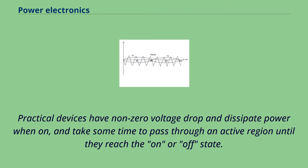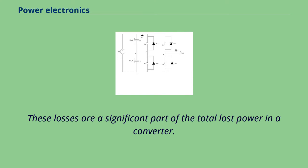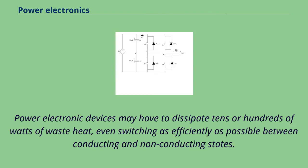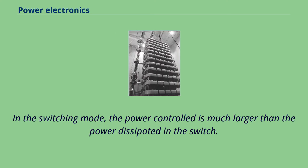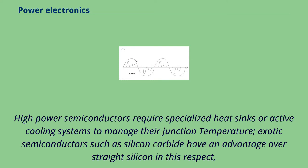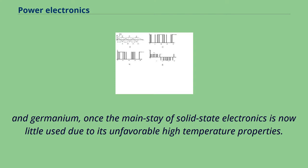Practical devices have non-zero voltage drop and dissipate power when on, and take some time to pass through an active region until they reach the on or off state. These losses are a significant part of the total lost power in a converter. Power electronic devices may have to dissipate tens or hundreds of watts of waste heat, even switching as efficiently as possible between conducting and non-conducting states. High-power semiconductors require specialized heat sinks or active cooling systems to manage their junction temperature. Exotic semiconductors such as silicon carbide have an advantage over straight silicon in this respect, while germanium is now little used due to its unfavorable high-temperature properties.